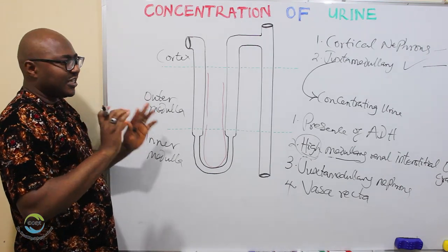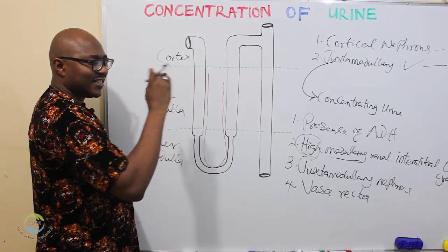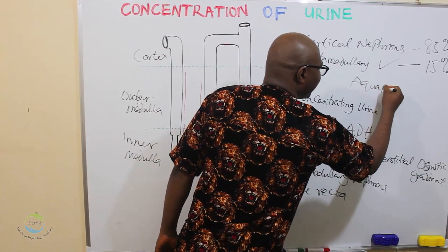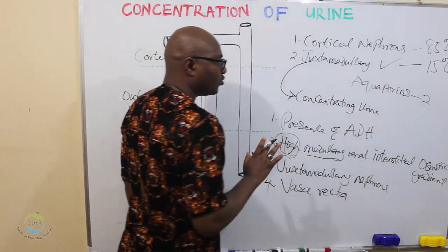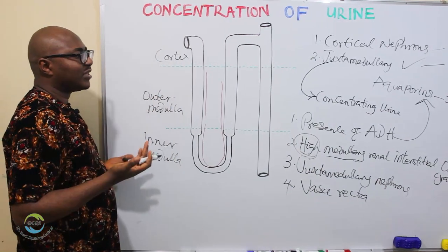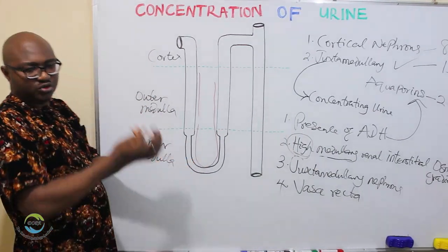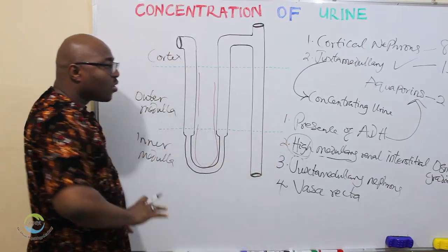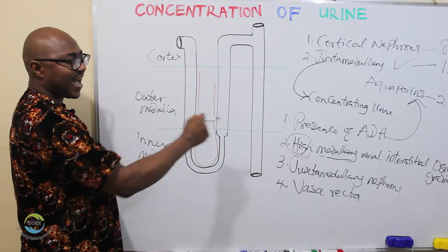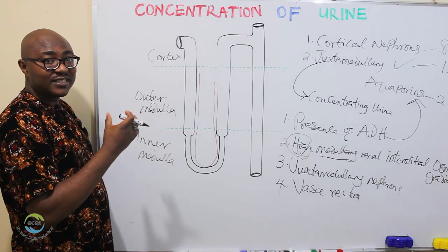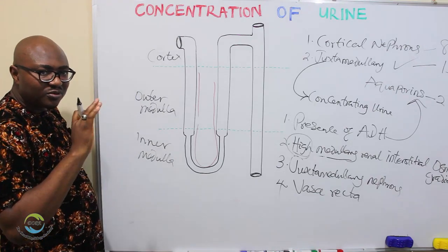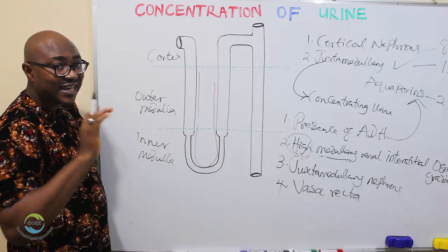ADH functions to stimulate the insertion of aquaporin-2, the water channels that water will pass through. But even when you have water channels, the osmotic gradient needs to draw the water. So how the nephron creates a high medullary interstitial osmotic gradient is the major point of this lecture. We'll talk deeply into that after this break.